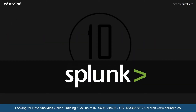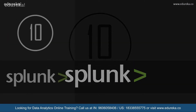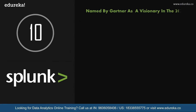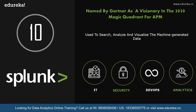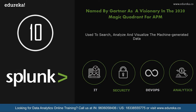The first tool is Splunk. Splunk is a platform used to search, analyze, and visualize the machine-generated data gathered from applications, websites, etc. Being named by Gartner as a visionary in the 2020 Magic Quadrant for APM, Splunk has evolved products in various fields such as IT security, DevOps, and analytics.